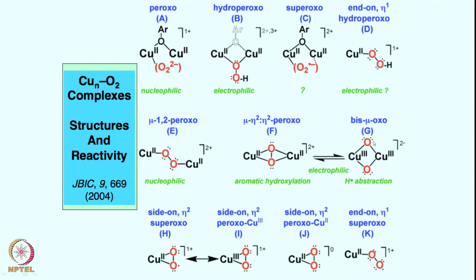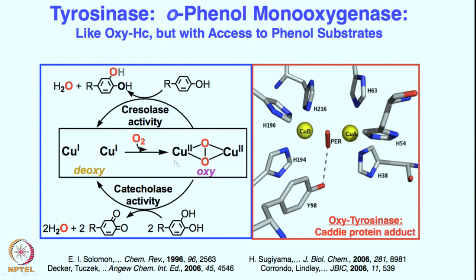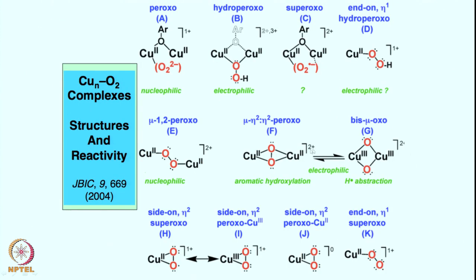There is now enough literature to suggest that although the side-on peroxo forms fast, during phenol interaction it is the bis-μ-oxo species that is being generated and is therefore the true active species. The recent studies suggest that it is the peroxo to start with, but then during phenol interaction — especially with phenolate — it is the bis-μ-oxo species that is generated. These species are in equilibrium with each other, making it very difficult to maintain 100 percent purity of one versus another, although both are capable of doing the chemistry.